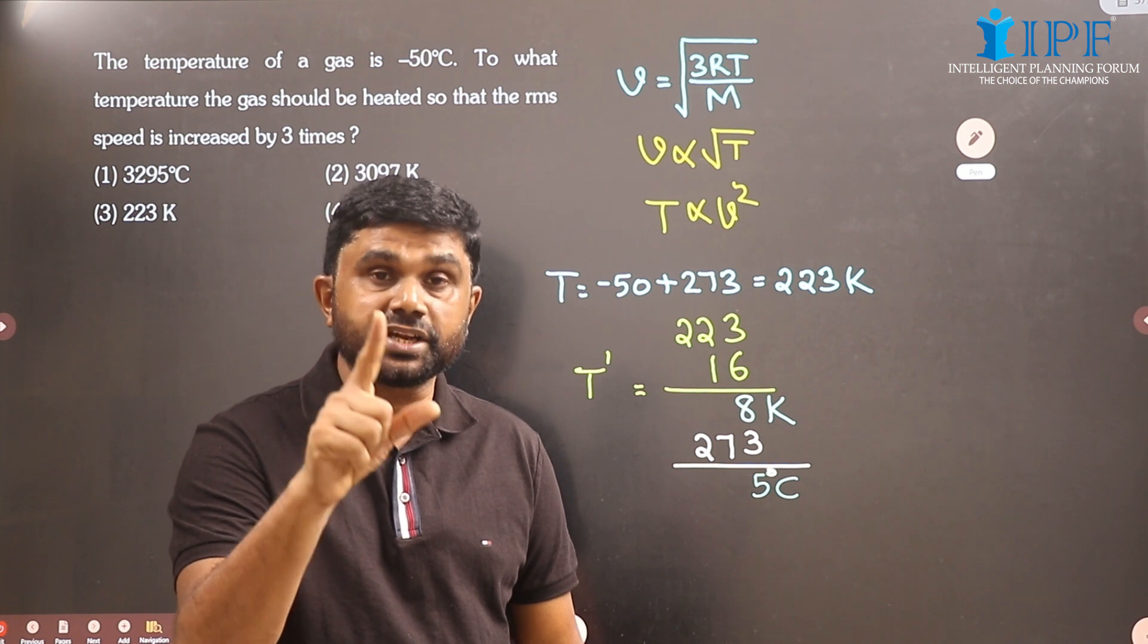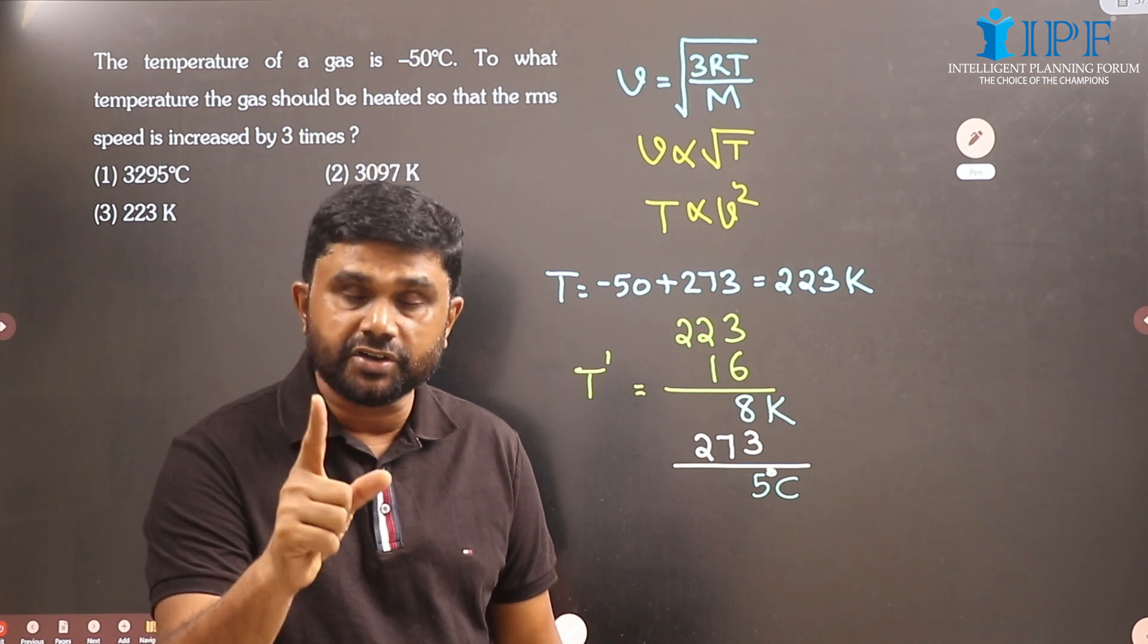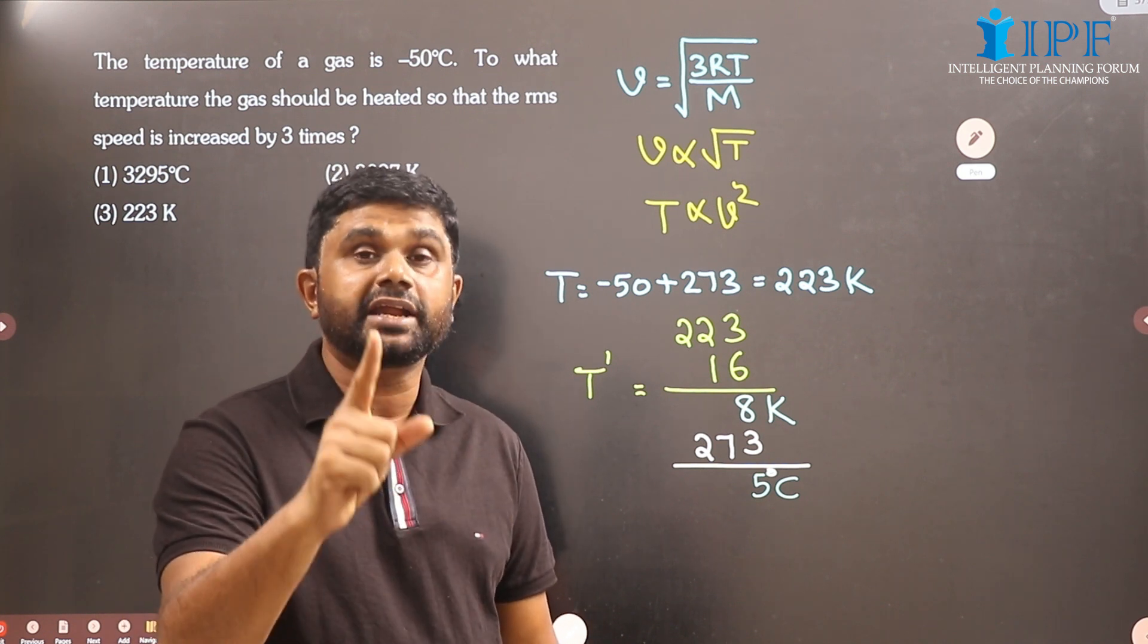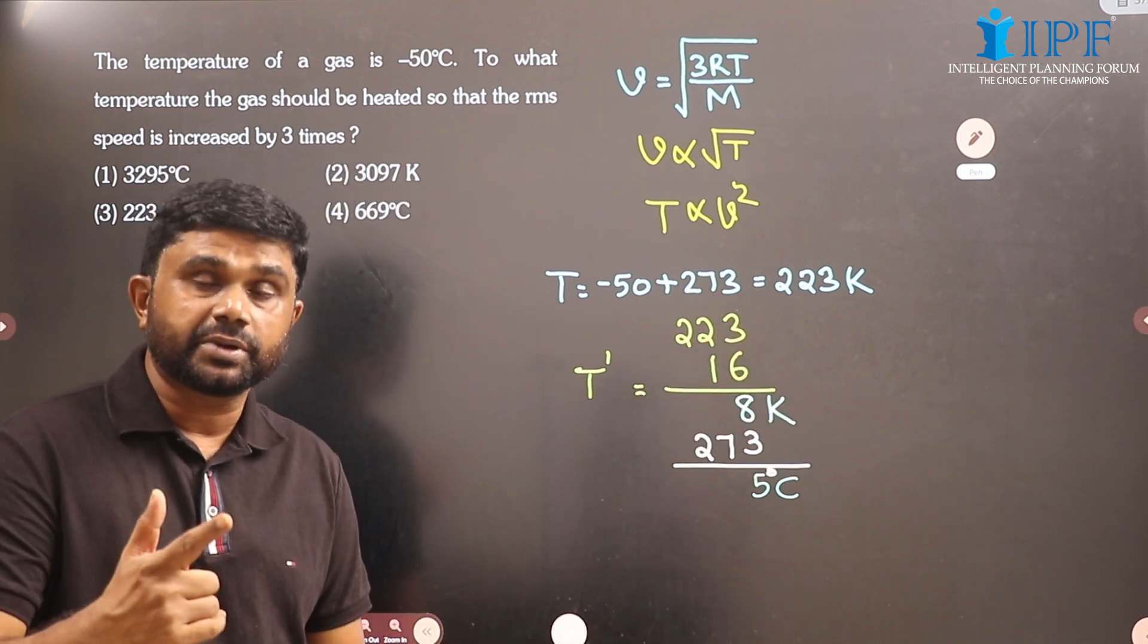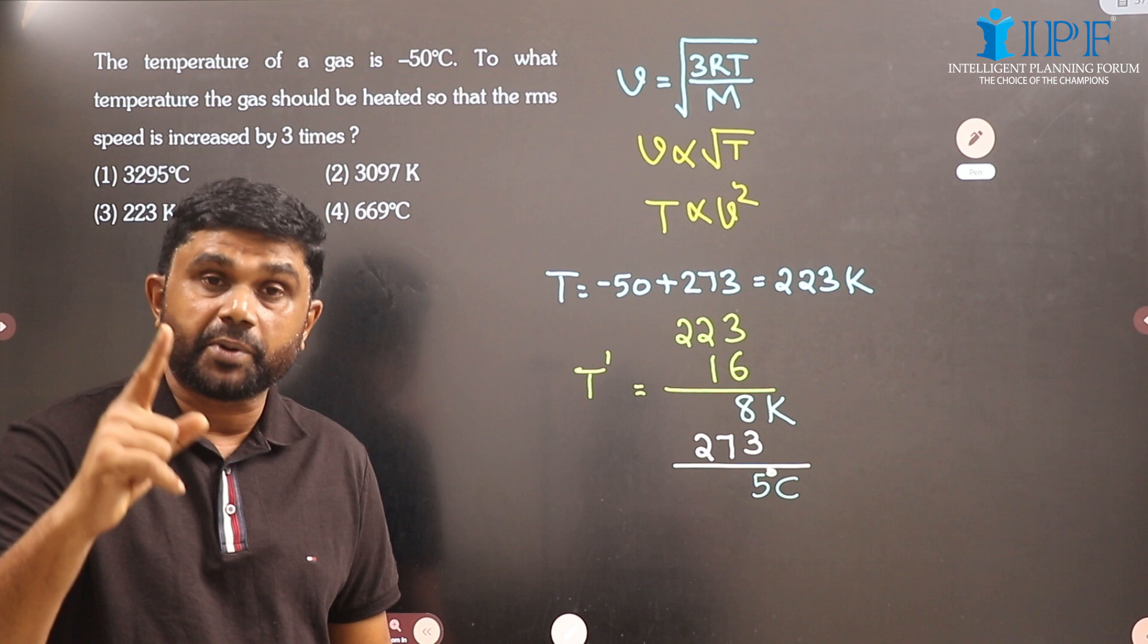Initial temperature is minus 50 degrees Celsius. We have to convert it into Kelvin by adding 273, so it will be 223 Kelvin. Final temperature is 223 multiplied by 16.